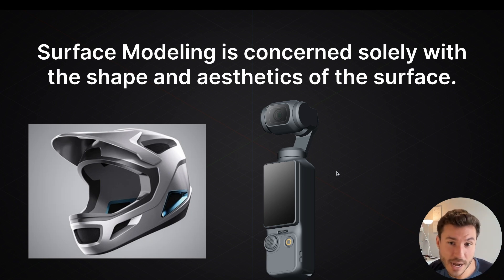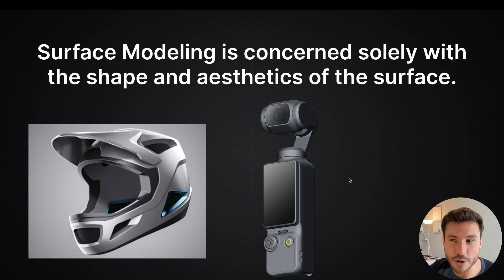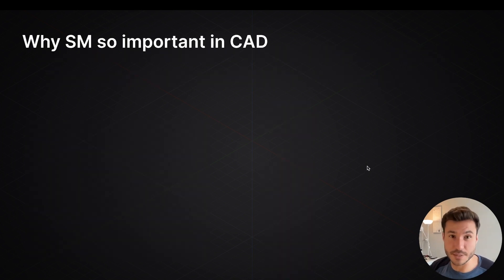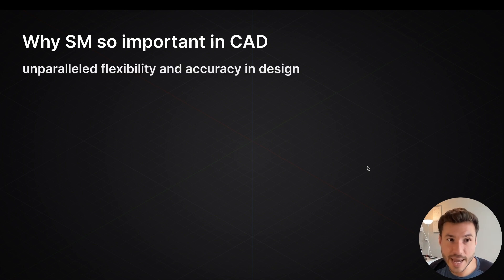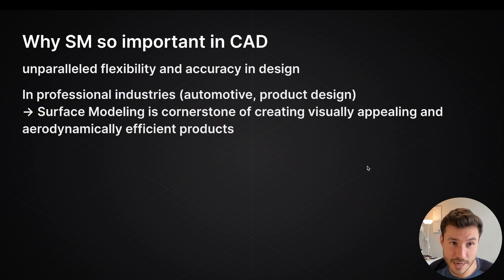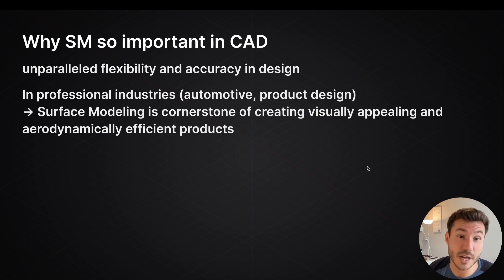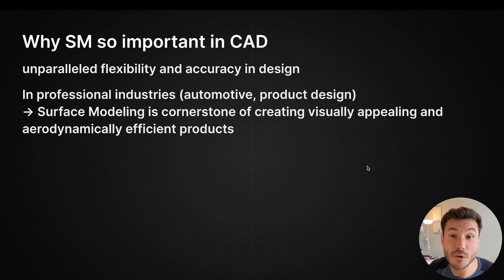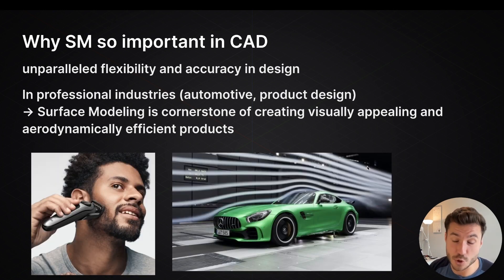For this action cam, we don't create anything on the inside — none of those thousands of electronics chips. Surface modeling is just the outer appearance. And that's why surface modeling is so important in CAD: it provides absolutely unparalleled flexibility and accuracy in design in professional industries like product design and automotive. Surface modeling is the cornerstone for creating visually appealing and aerodynamically efficient products.